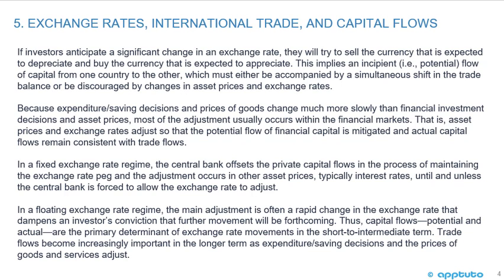Because expenditure and savings decisions and prices of goods change much more slowly than financial investment decisions and asset prices, most of the adjustment usually occurs within the financial markets. That is, asset prices and exchange rates adjust so that the potential flow of financial capital is mitigated and actual capital flows remain consistent with trade flows.